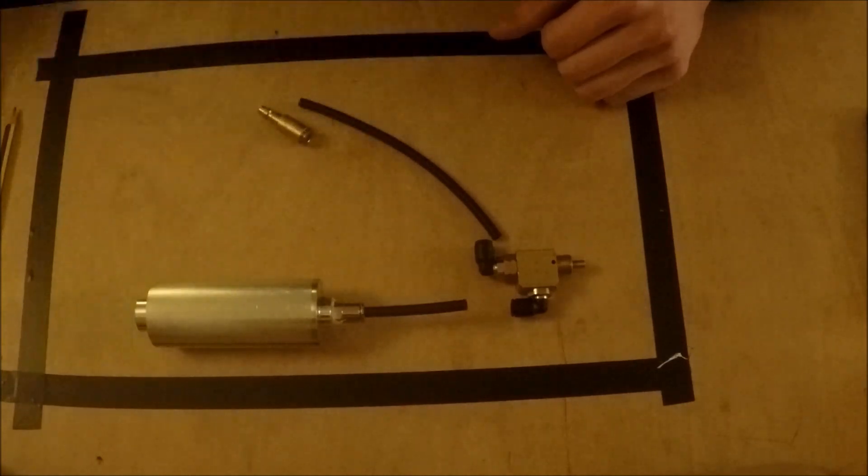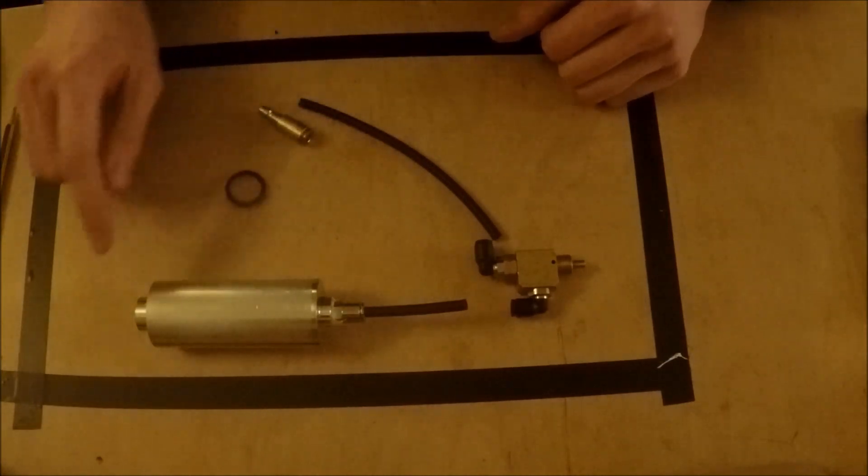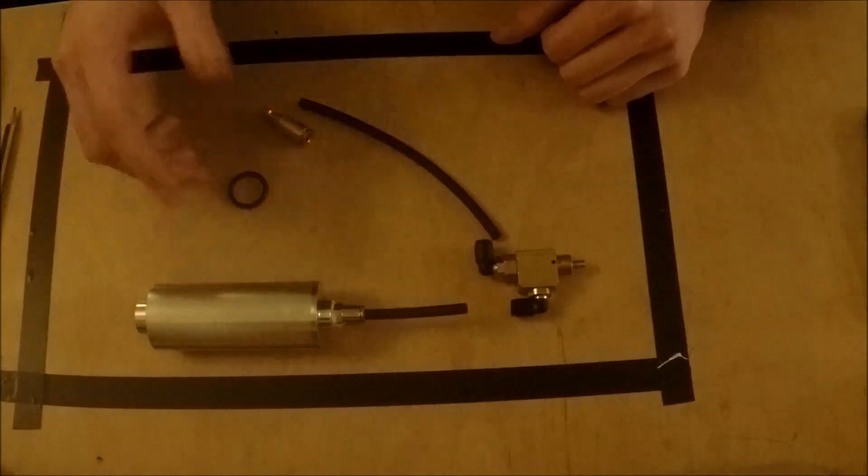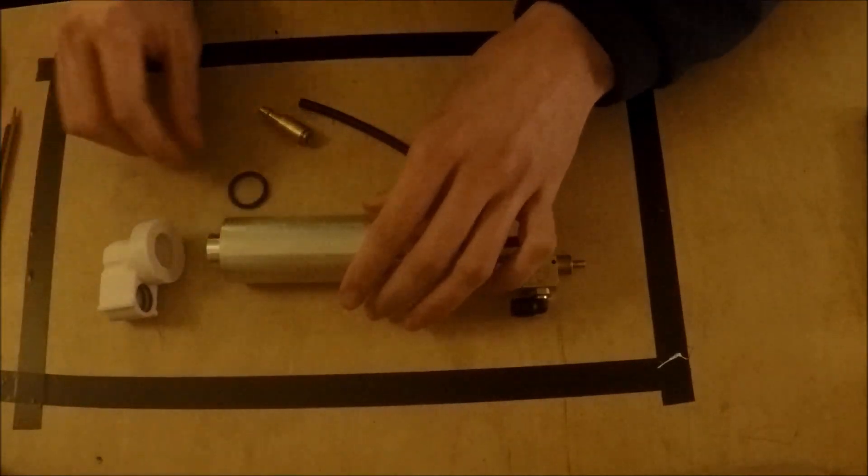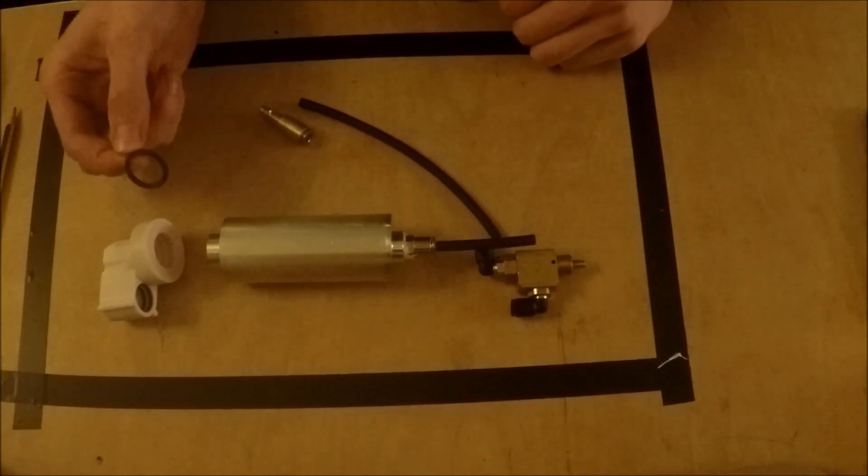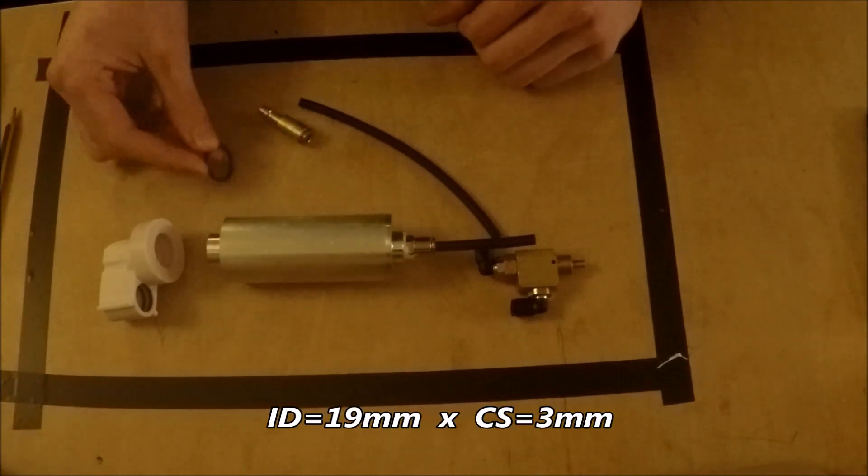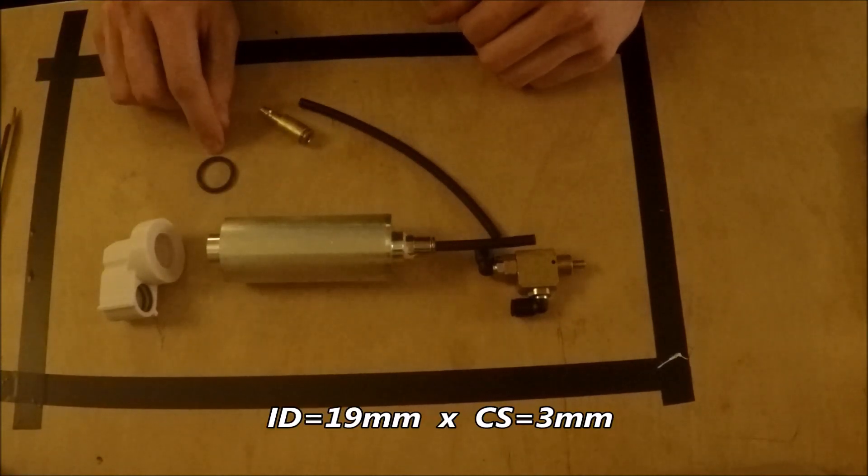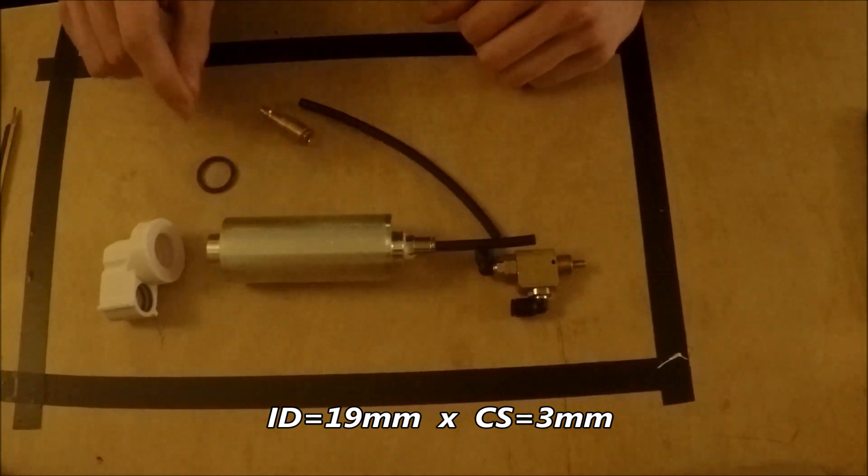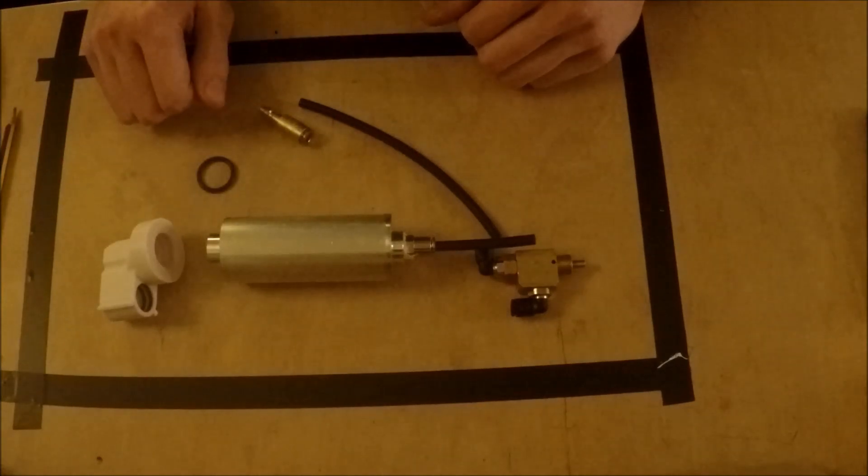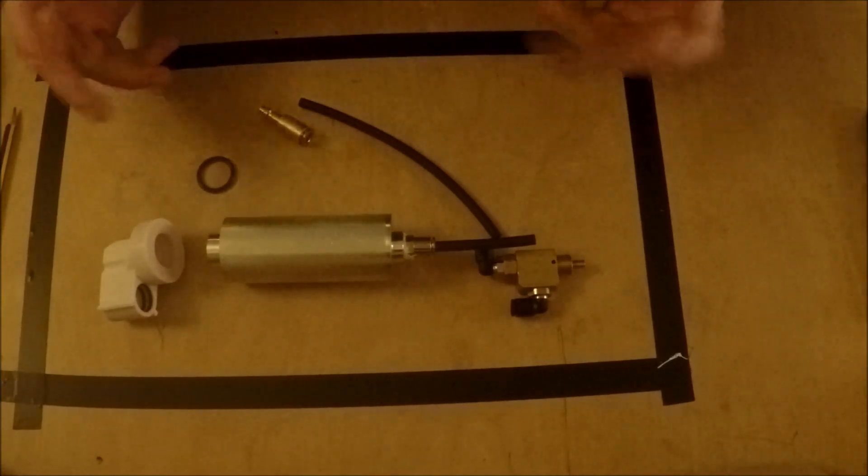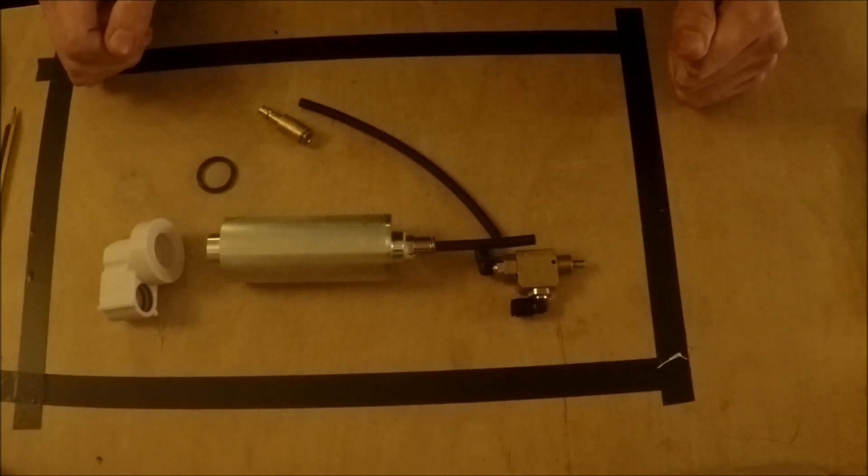The one other thing is that in order to seal the SpexBZ into the turnaround, which we have here, you do need one new O-ring. This is an inner diameter of 19 millimeters and a cross section of 3 millimeters. And I've looked this up even just on eBay, it's quite easy to find. So now I'll get into just building the Lynx.